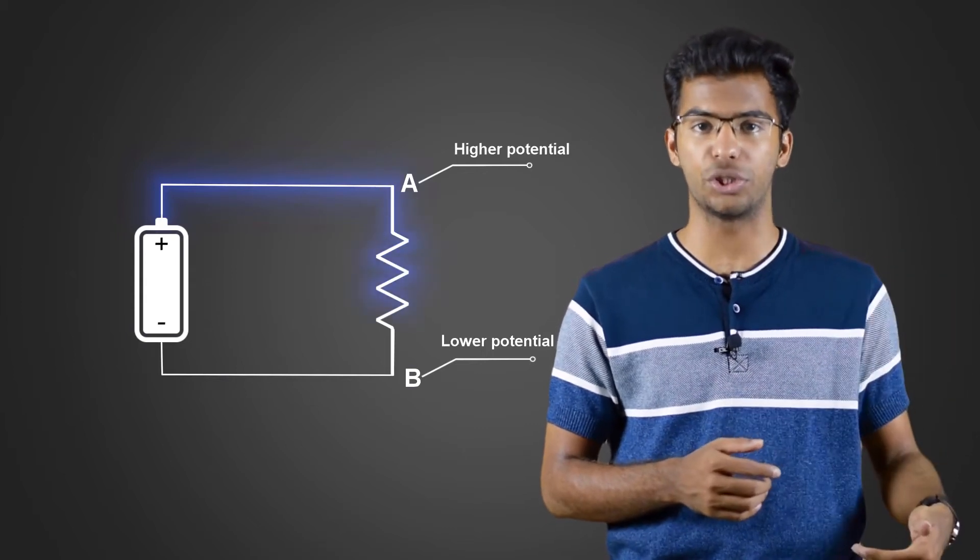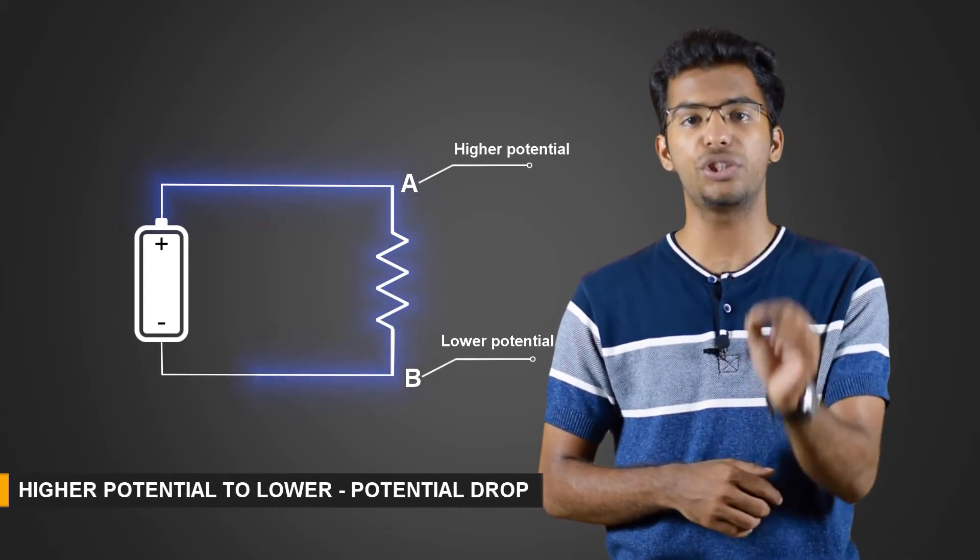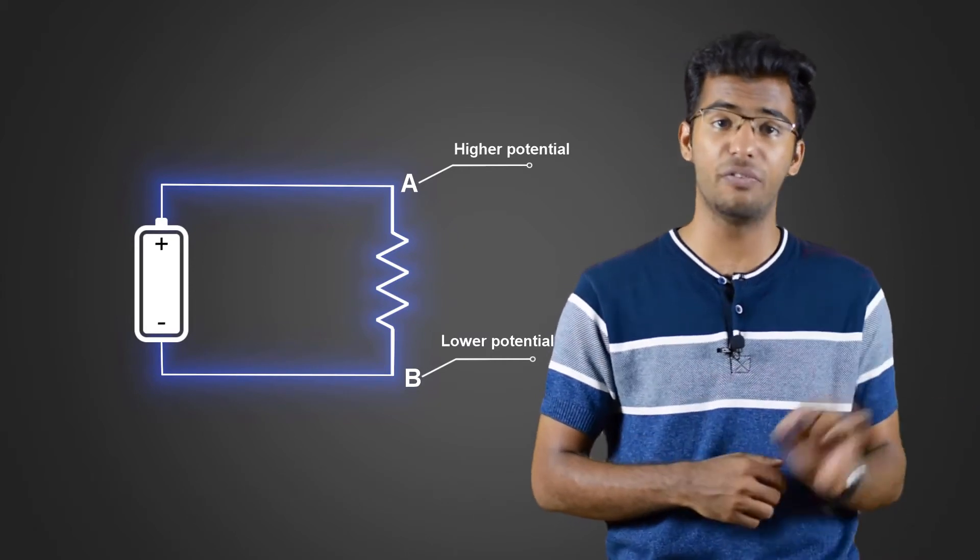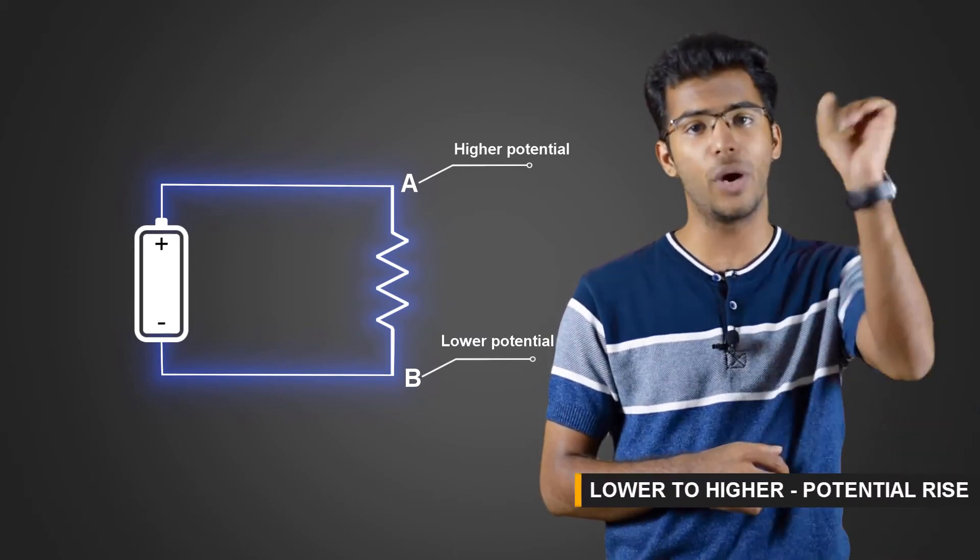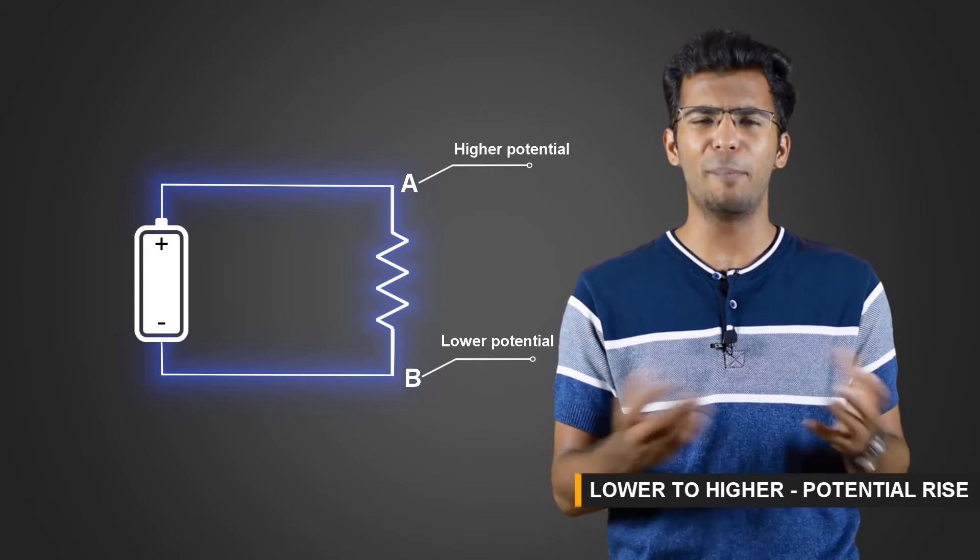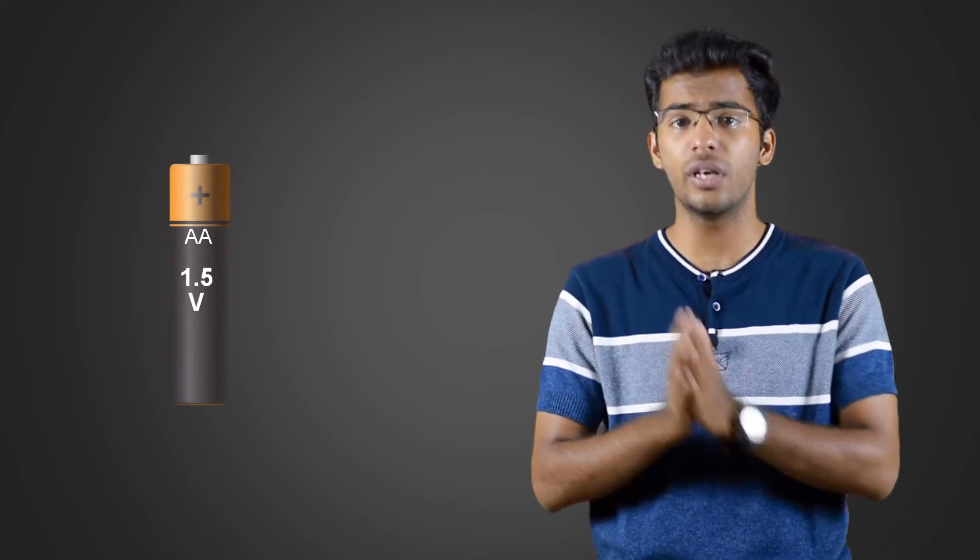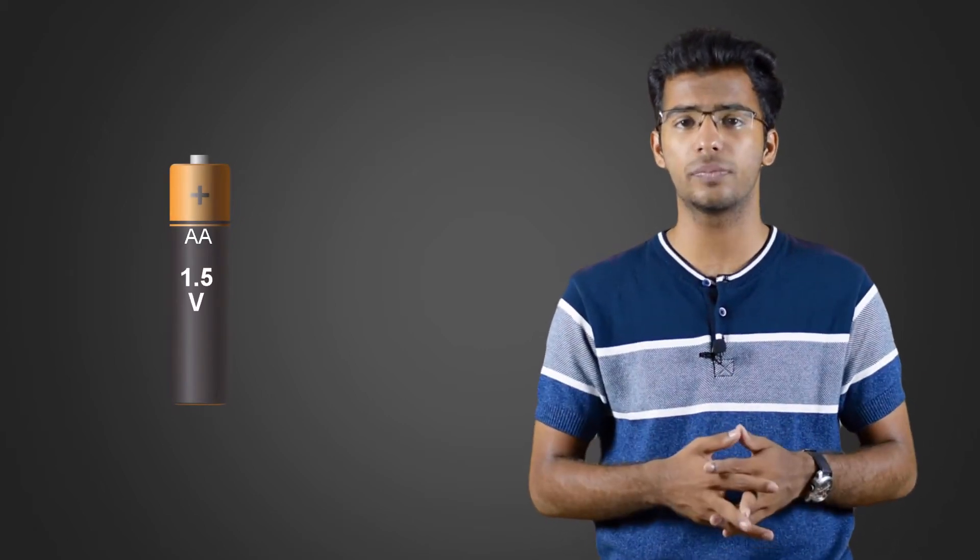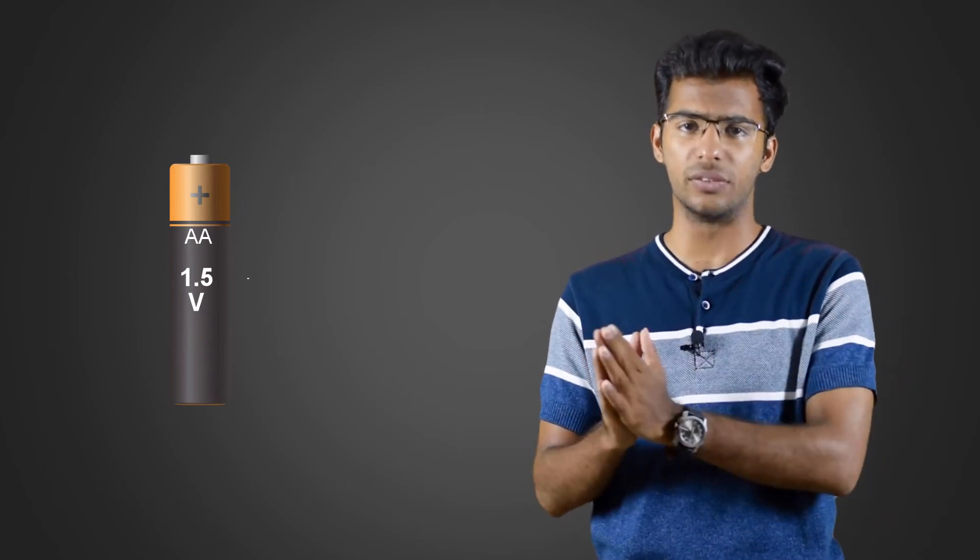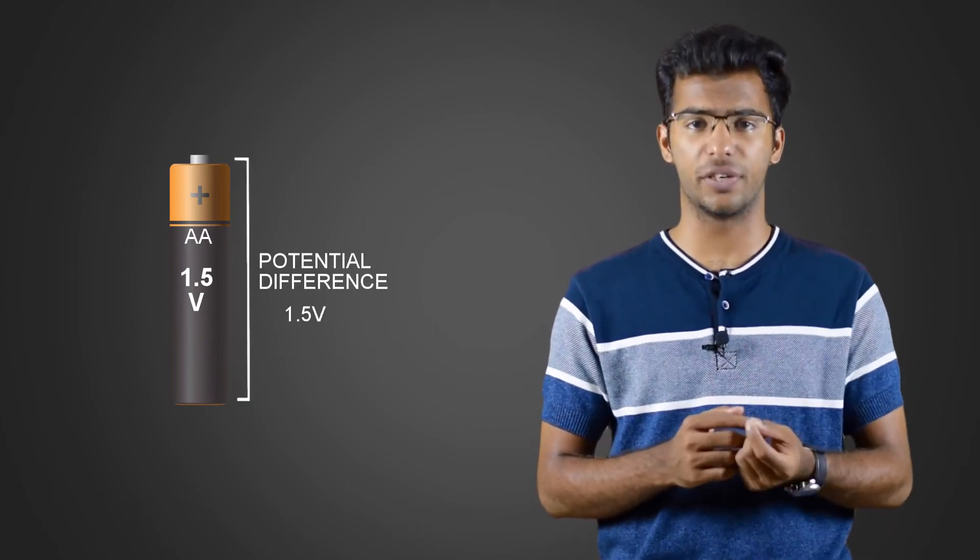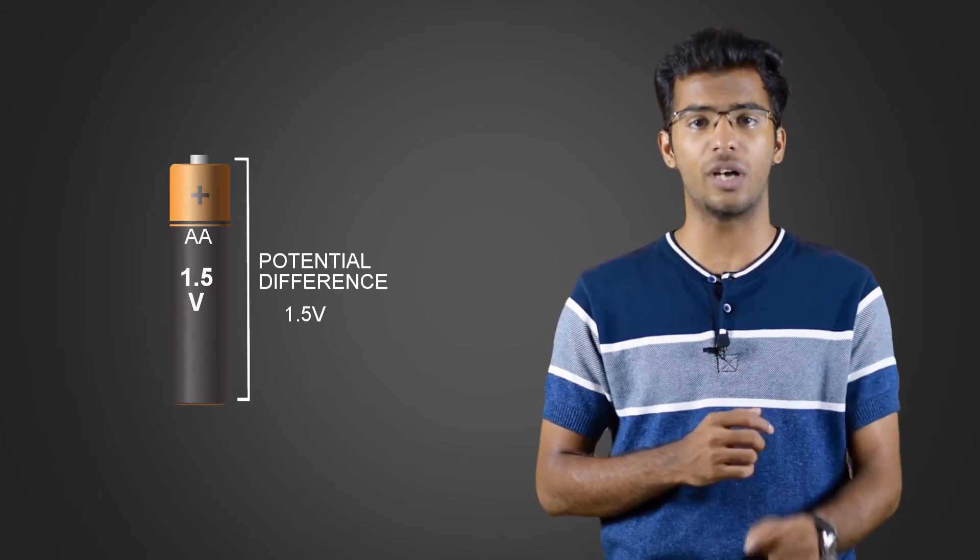Let's take an example of a 1.5 volt double A battery which we use in clocks and TV remotes. This 1.5 volt means there will be a potential difference of 1.5 volts across the two ends of the battery so that the current can flow between these two ends.